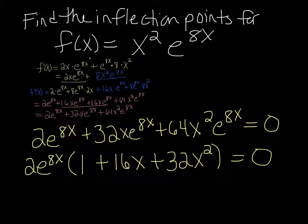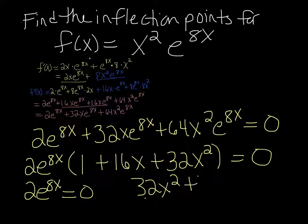You have a product that equals 0, so one or both equals 0. So you set each part equal to 0. I'm going to switch the second part around a little bit. I'm going to put it in descending order. So 32x squared plus 16x plus 1 equals 0.